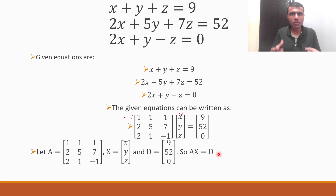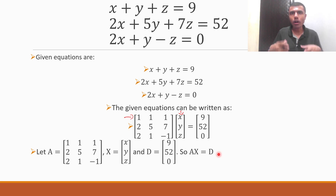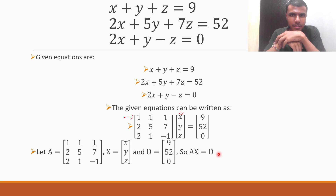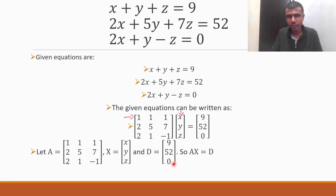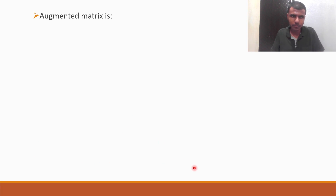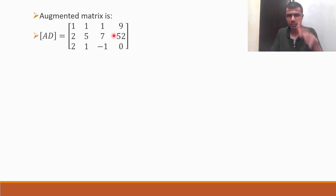Now, what is the Gauss-Jordan method and how to solve it? In Gauss-Jordan method we are going to construct an augmented matrix. The augmented matrix is nothing but we club A and D together — like 1, 2, 2 | 9; 1, 5, 7 | 52; 1, 1, −1 | 0. So the augmented matrix [A|D] equals this.